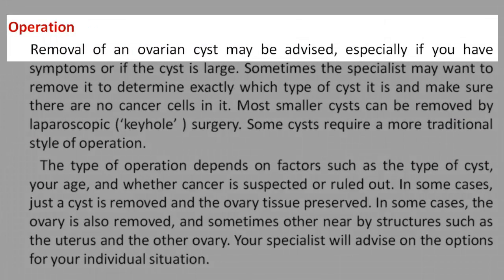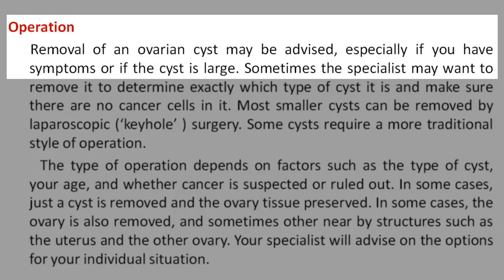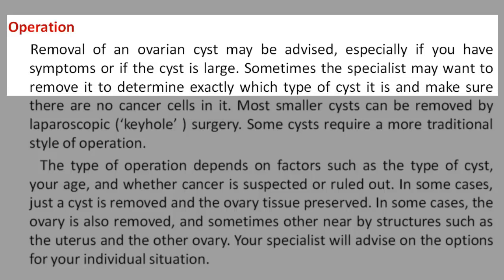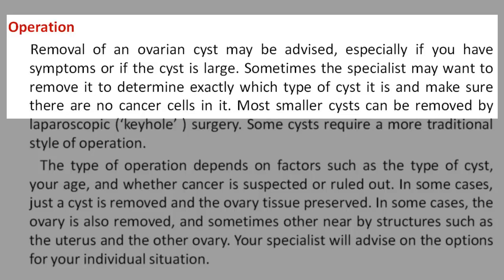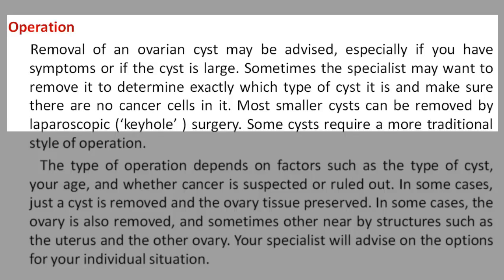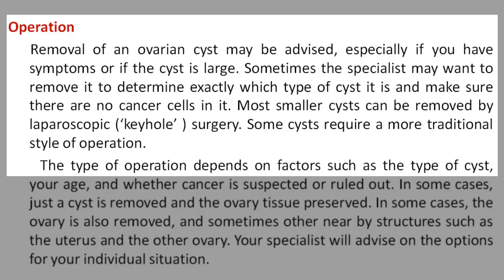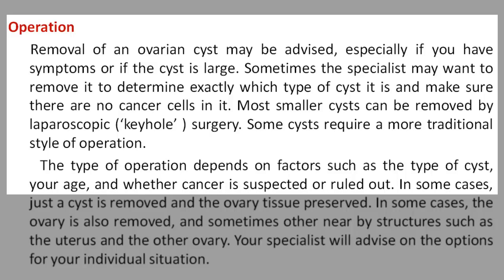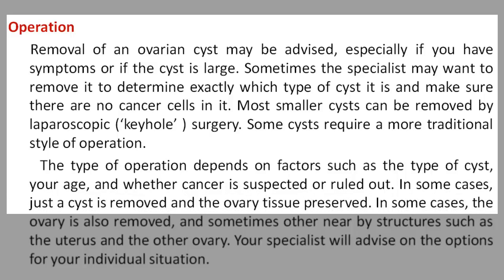Removal of an ovarian cyst may be advised, especially if you have symptoms or if the cyst is large. Sometimes a specialist may want to remove it to determine exactly which type of cyst it is and make sure there are no cancer cells in it. Most smaller cysts can be removed by laparoscopic keyhole surgery. Some cysts require a more traditional style of operation. The type of operation depends on factors such as the type of cyst, your age, and whether cancer is suspected or ruled out. In some cases, just the cyst is removed and the ovary tissue preserved.